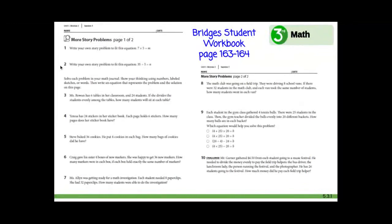You have worked to write two story problems. Next, you will work to solve some story problems. You should have your Bridges student workbook out and turn to page 163. You also still need your notebook to be able to solve these problems. We are going to solve two problems together, and then you will work to solve the rest on your own by reading the problem, taking notes about the problem, showing your work, and solving the problem.